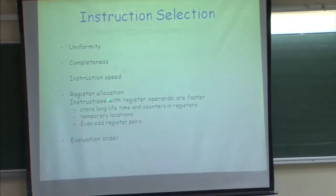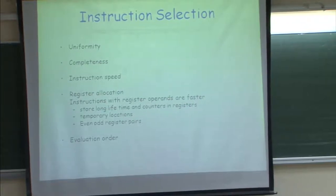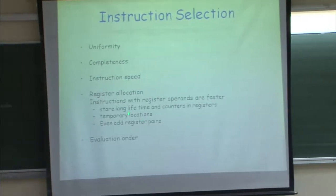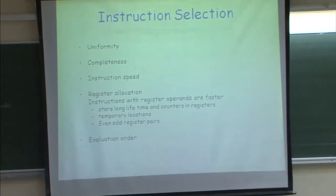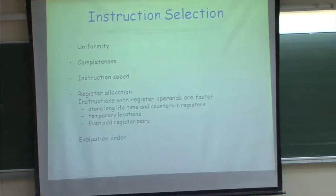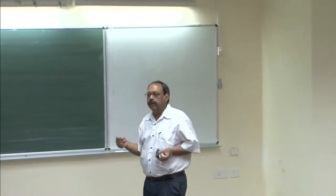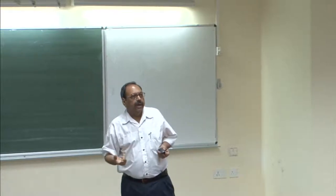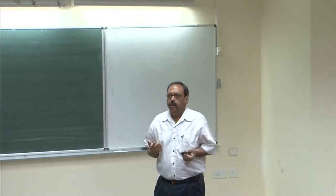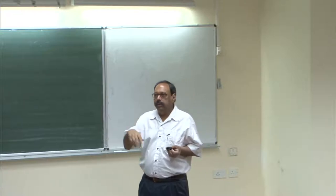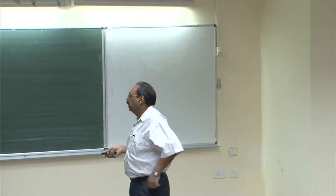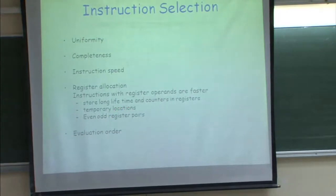Register allocation is another issue: instructions with register operands are faster, so we want to store frequently accessed, long-lifetime variables in registers. Long lifetime should be coupled with frequency of access. Long-lifetime frequently accessed variables go into registers; there are also temporary locations to consider, and on some machines we also have to worry about pairing of even and odd registers. For example, Intel machines may require that a long word be stored in a specific pair of registers, so even with available registers, you may not be able to load certain variables.